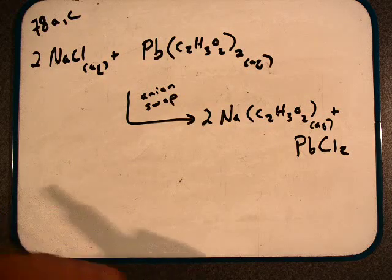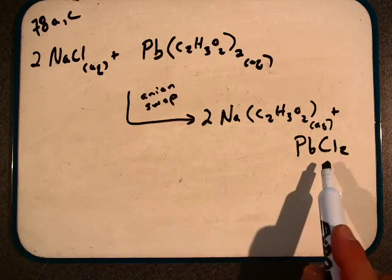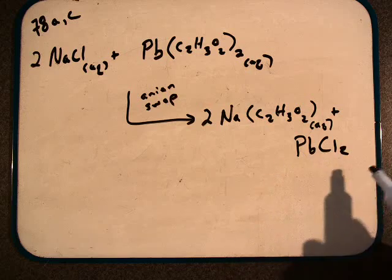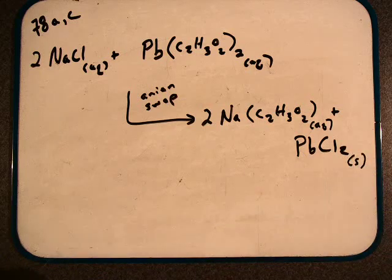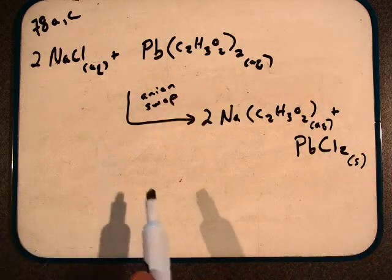Lead chloride: halides tend to be soluble but have some transition metal exceptions. Lead is one of those, so we would have a solid product. This would be our overall balanced reaction.